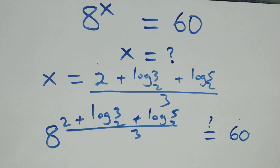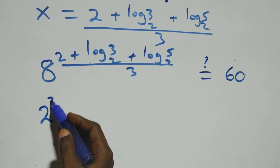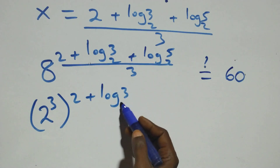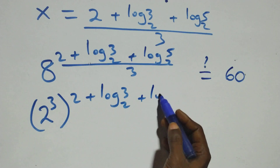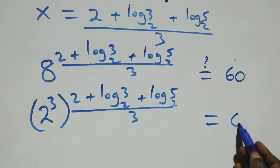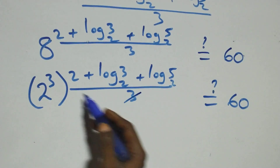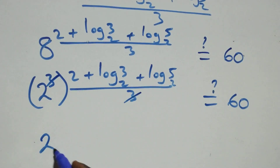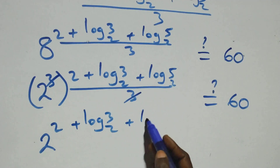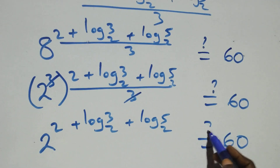We can express eight as two raised to power three, raised to power two plus log three base two plus log five base two, all over three, and this should equal sixty. This power multiplies: the three here cancels with the one over three, and we have two raised to power two plus log three base two plus log five base two, equals sixty.